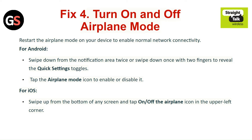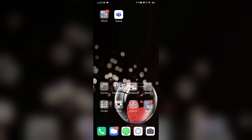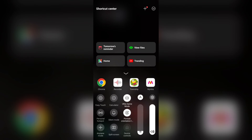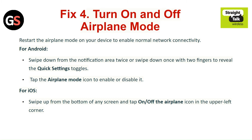Fix 4: Turn on and off the airplane mode. Restart the airplane mode on your device to re-enable normal network connectivity. For Android, swipe down from the notification area twice or swipe down once with two fingers to reveal the quick settings toggles. Tap on the airplane mode icon to enable or disable it. For iOS, swipe up from the bottom of any screen and tap on and off the airplane icon in the upper left corner.